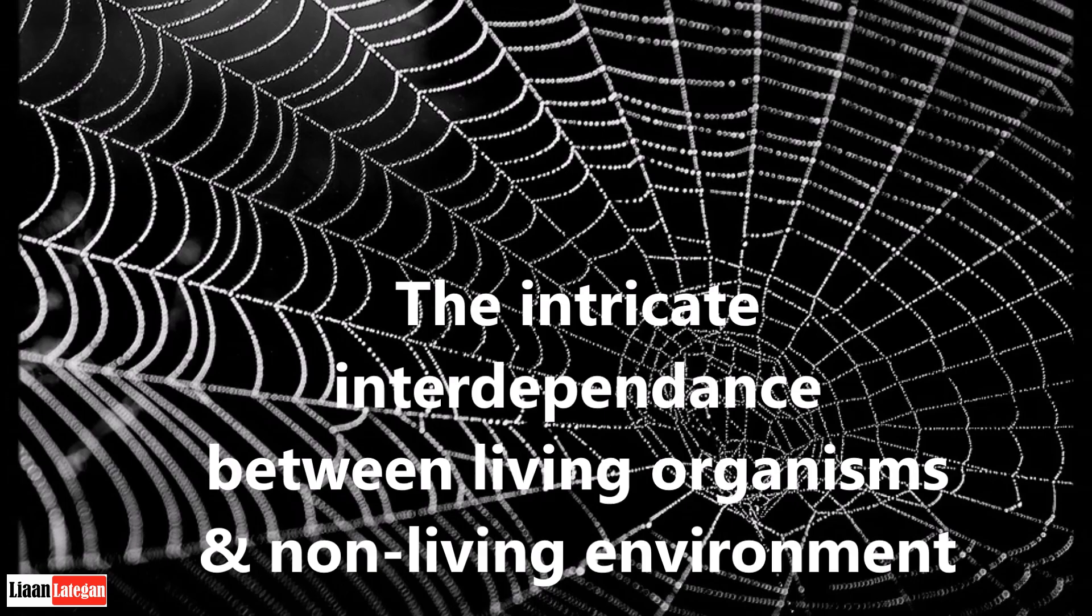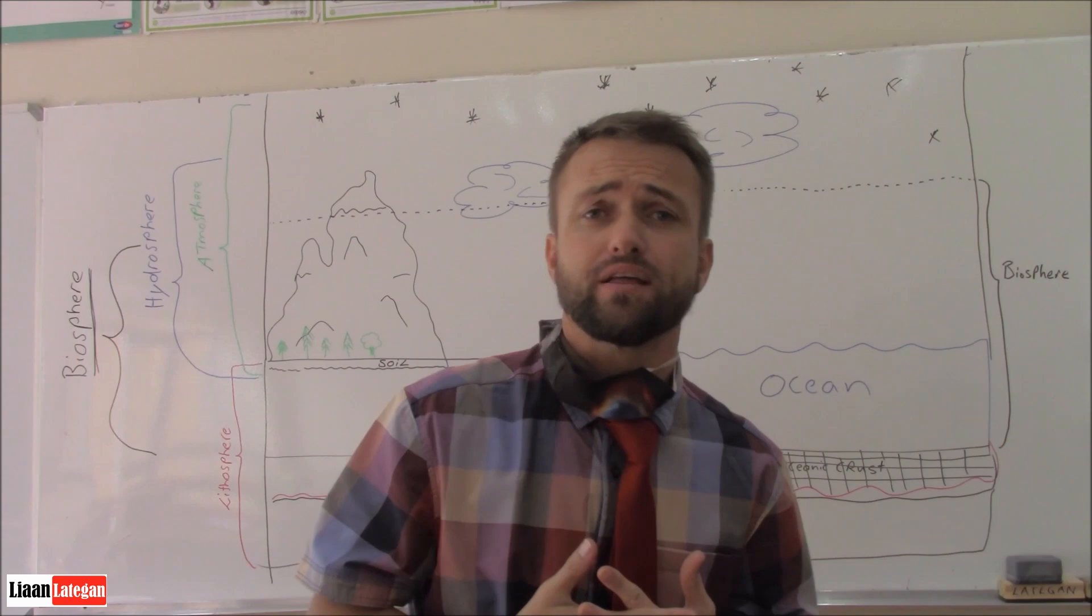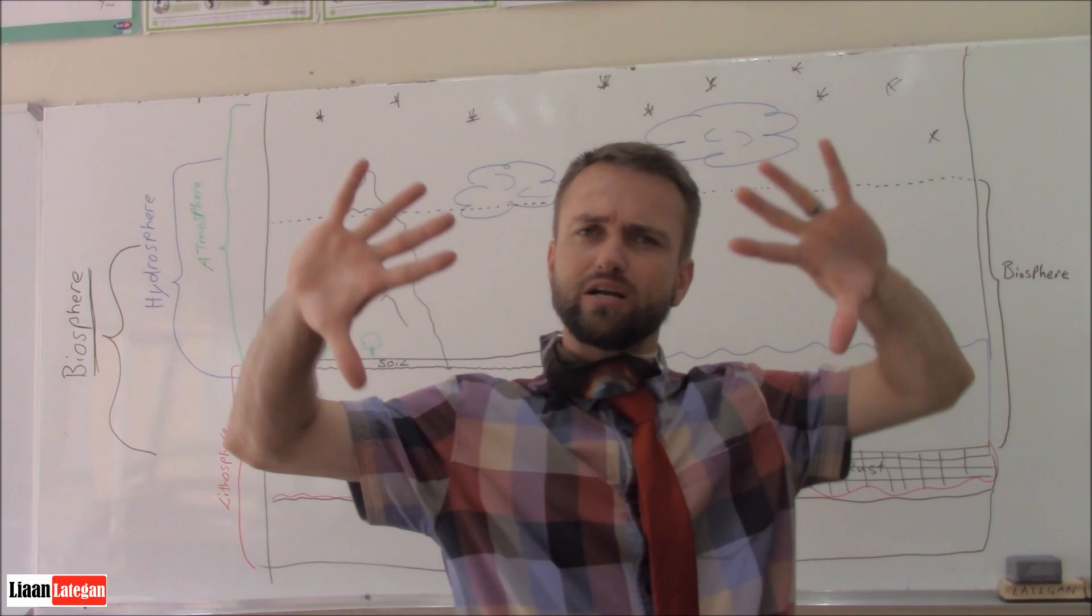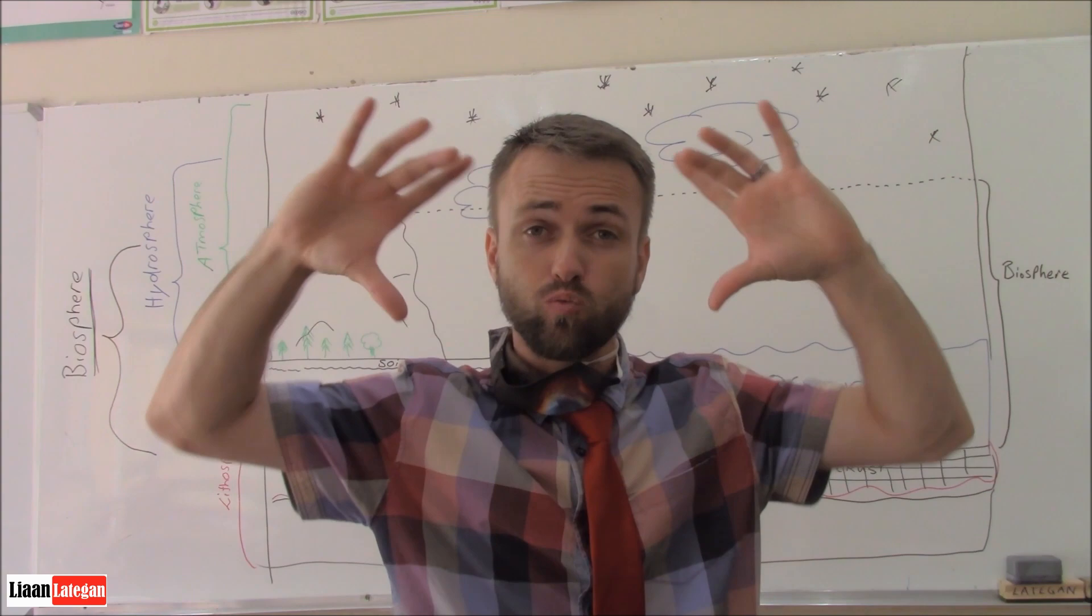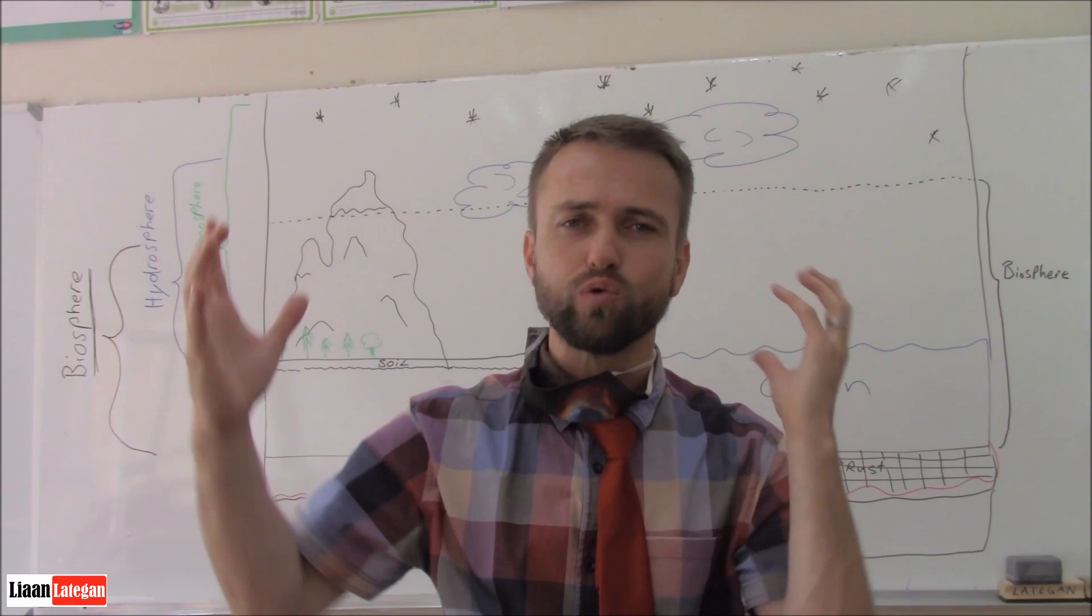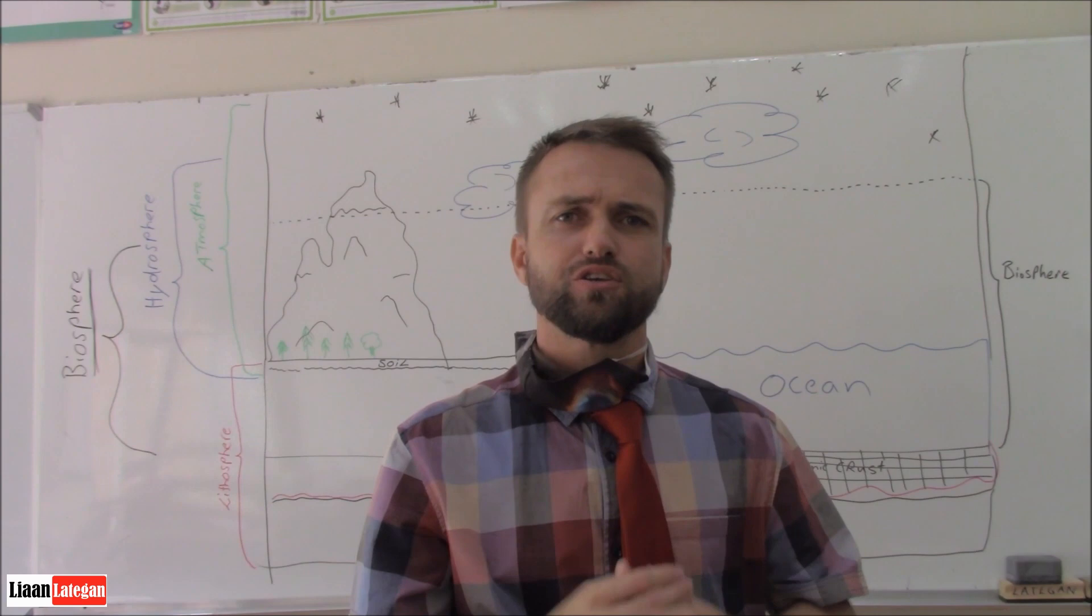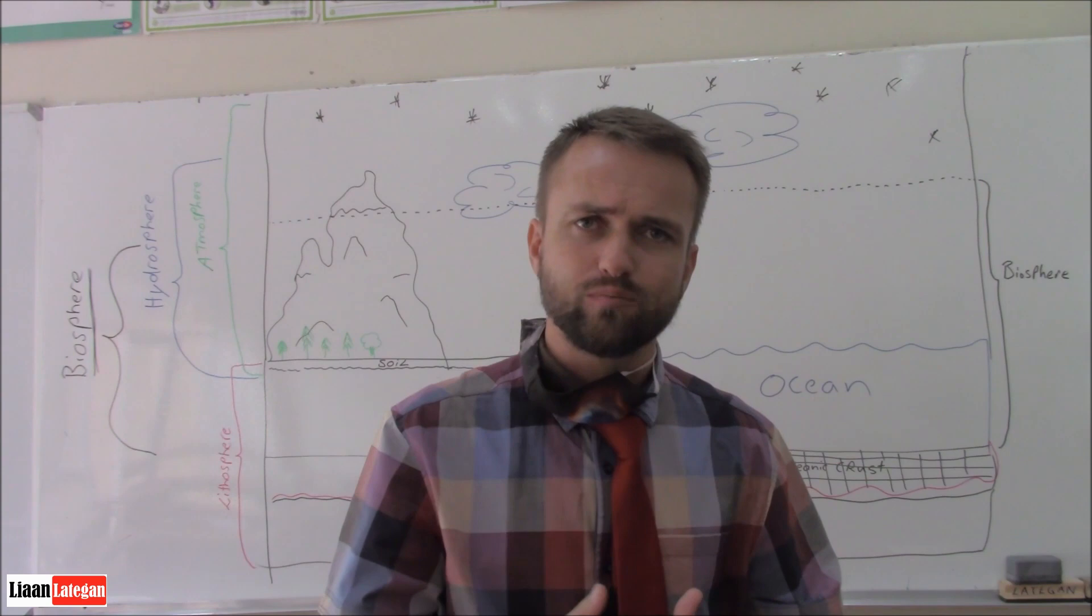So students, would you agree that all living things are connected with one another? You can use the example of a spider web. So if you look at the big spider web, you'll see that there's tiny little intricate details all forming together, forming that one spider web. And if we would take away one part of it, the whole spider web might fall or the spider might fall. And just like that, you are all connected within an ecosystem and all other living creatures and animals are also connected within an ecosystem.